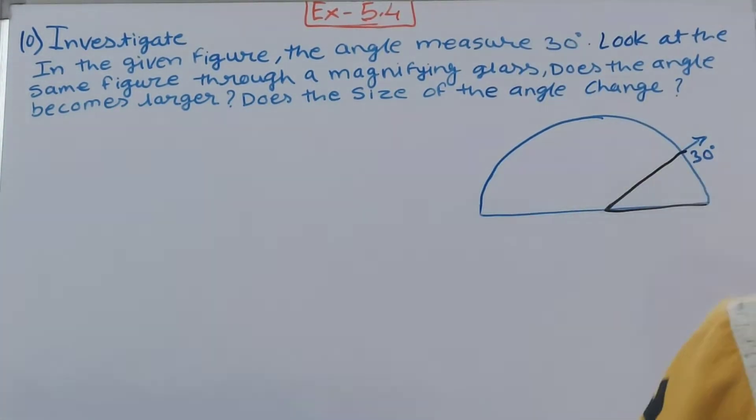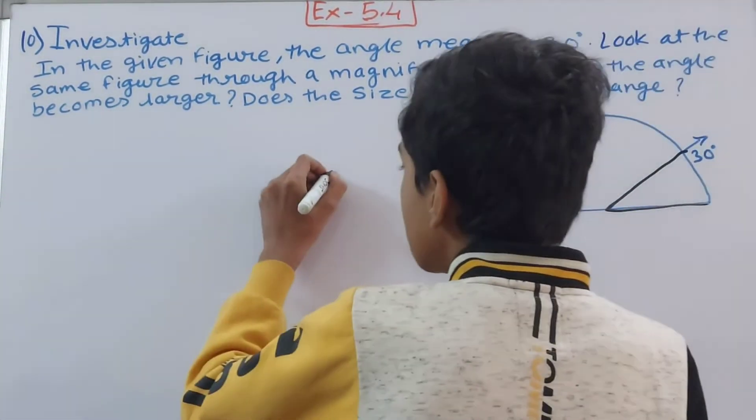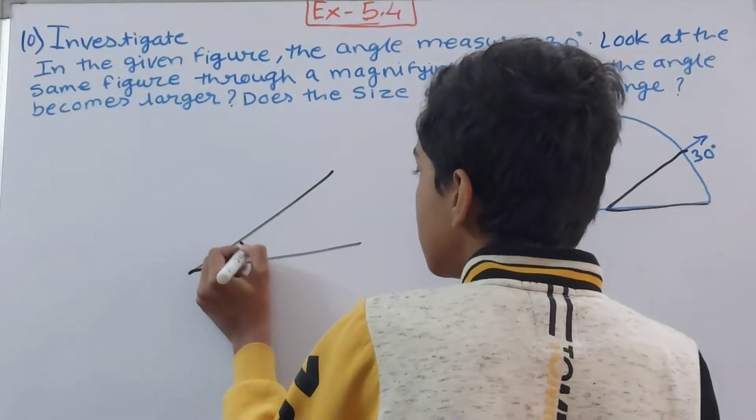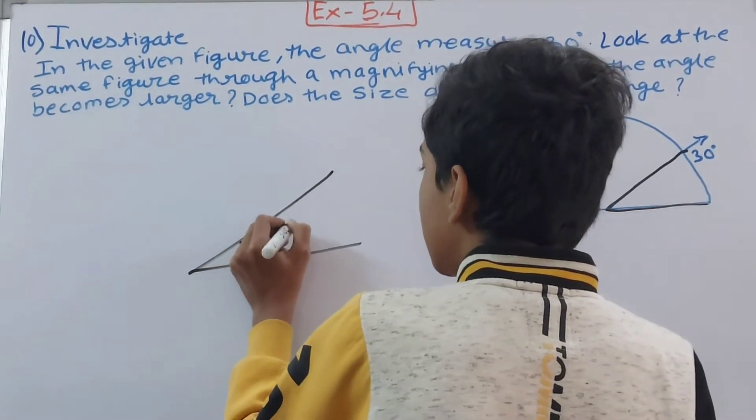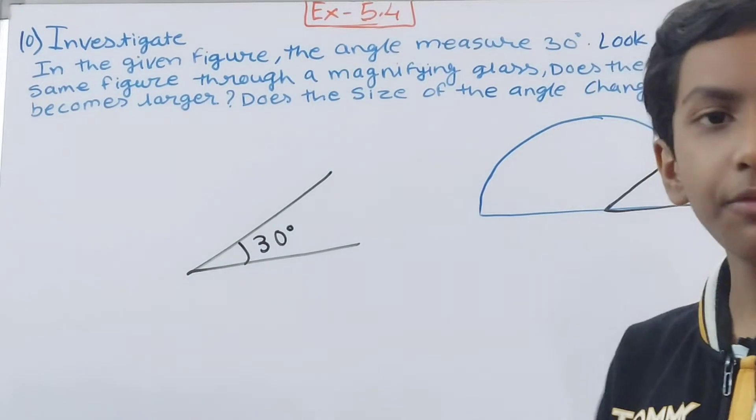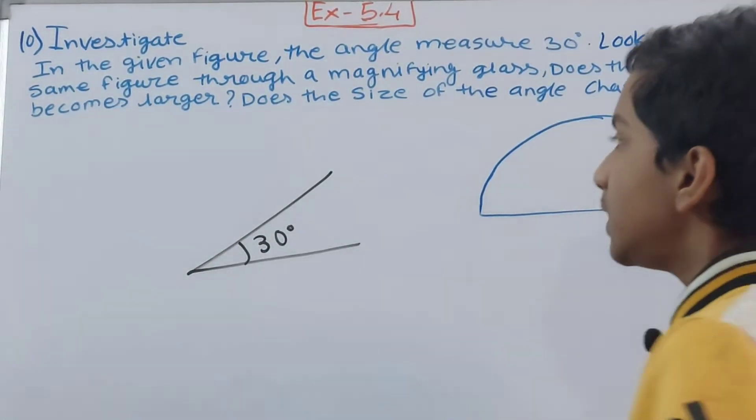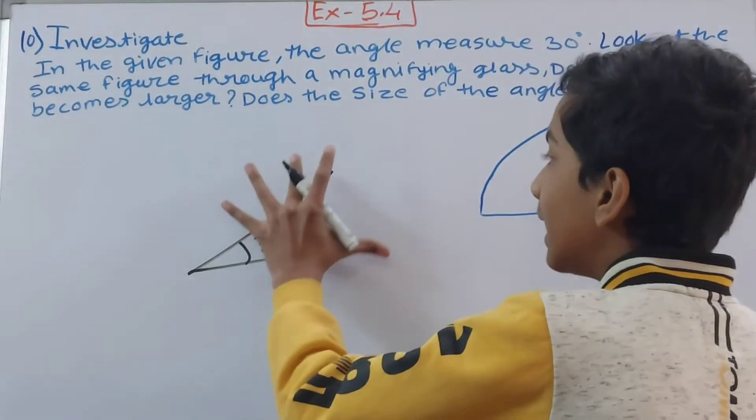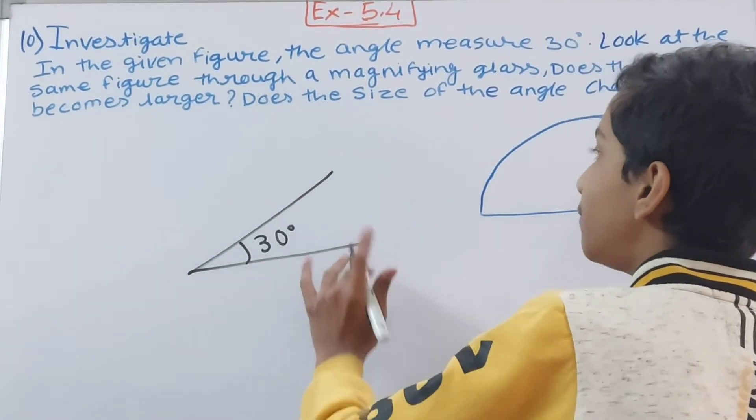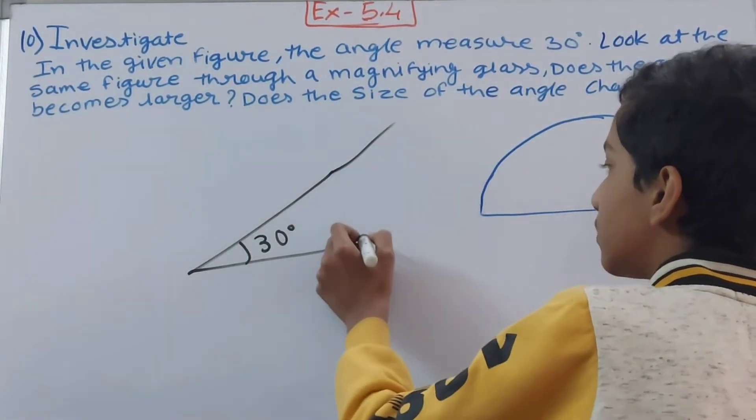Now we have to use it over here. How can you use it? Suppose this is your 30 degree angle, just suppose, okay, this is my 30 degree angle. Now if I will use a magnifying glass on this what will happen? See, if you will use a magnifying glass the angle will appear bigger like this. Okay, it will appear like this.